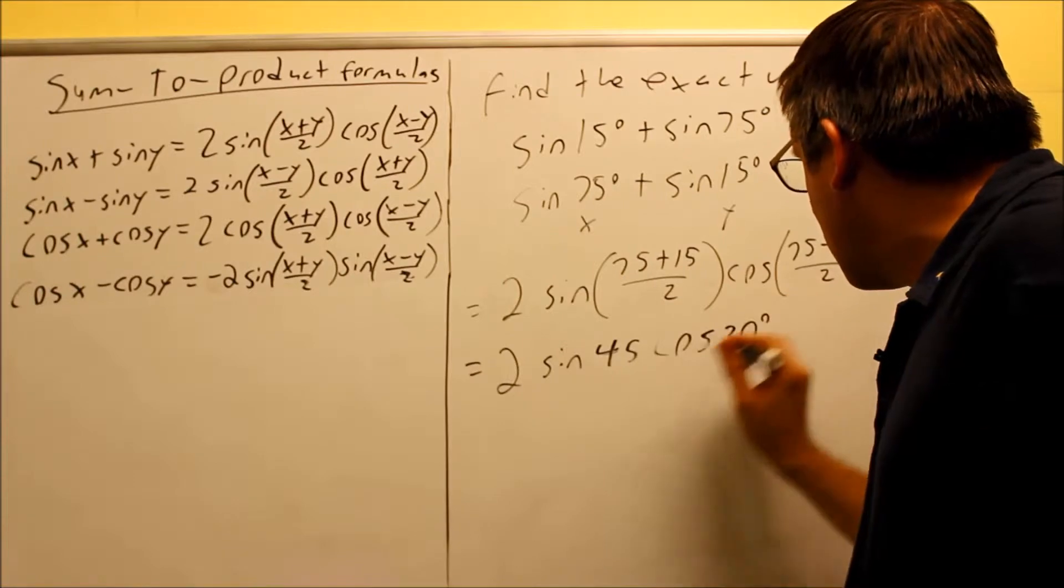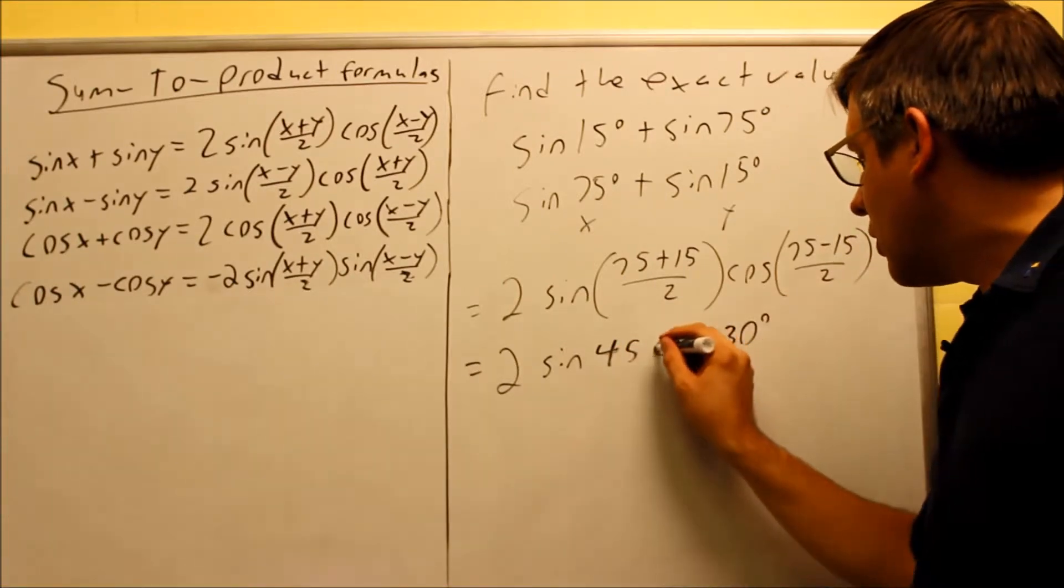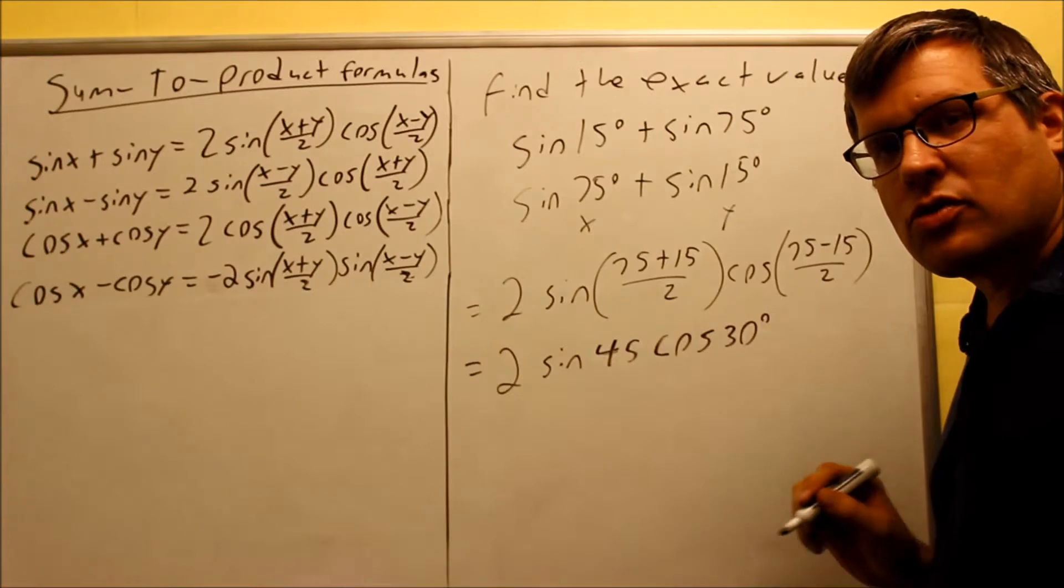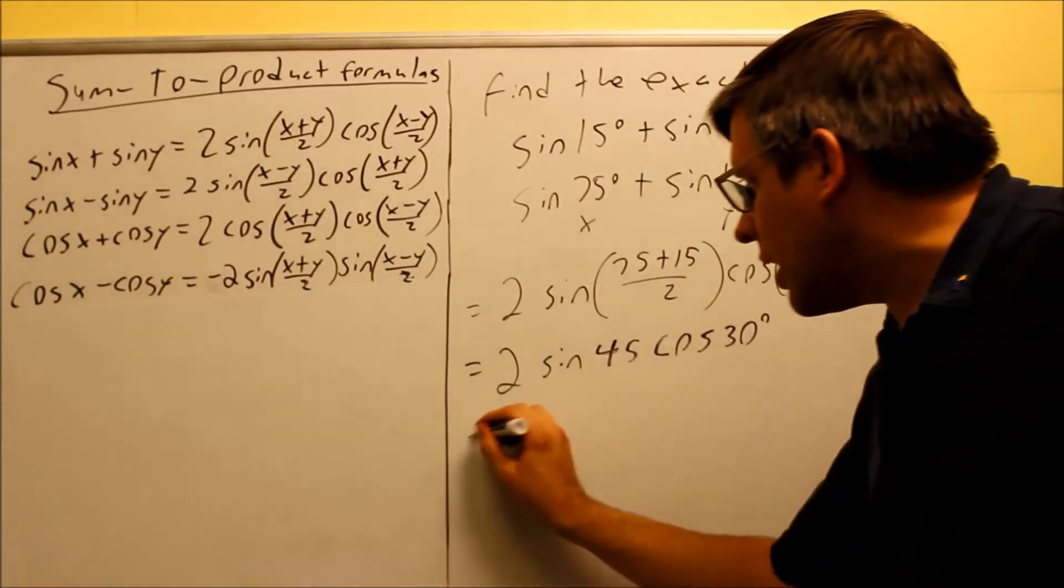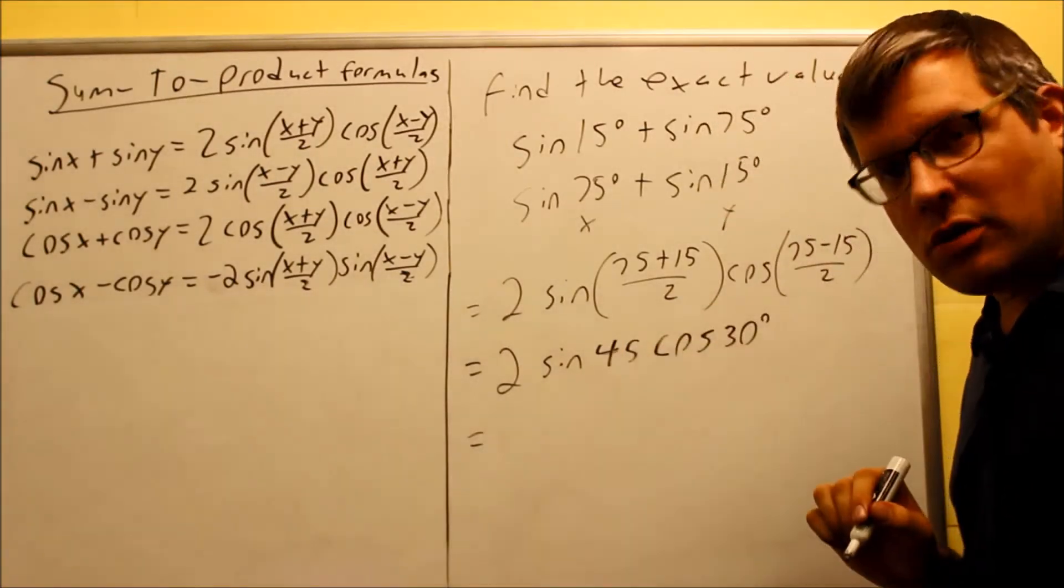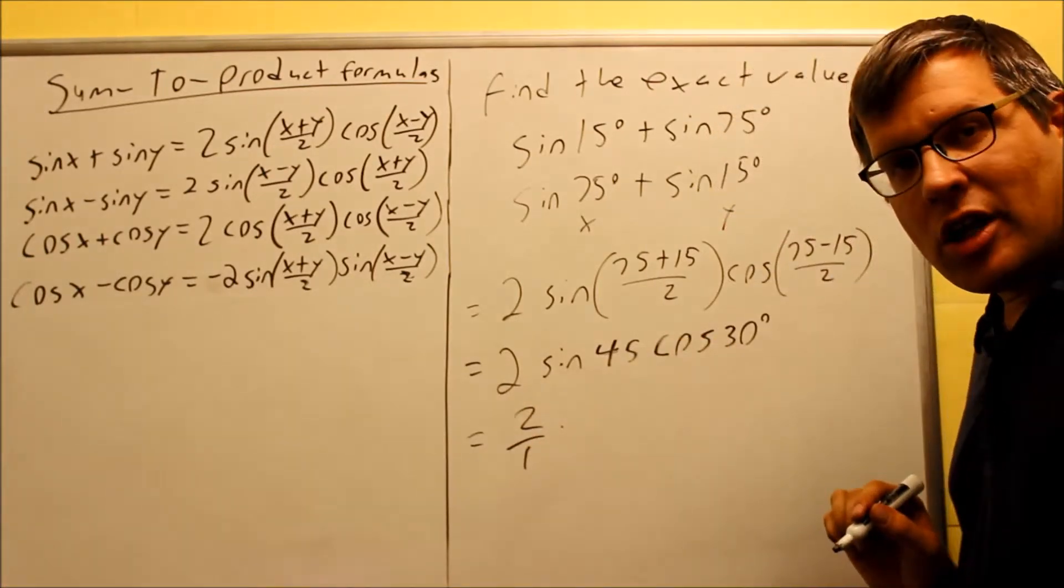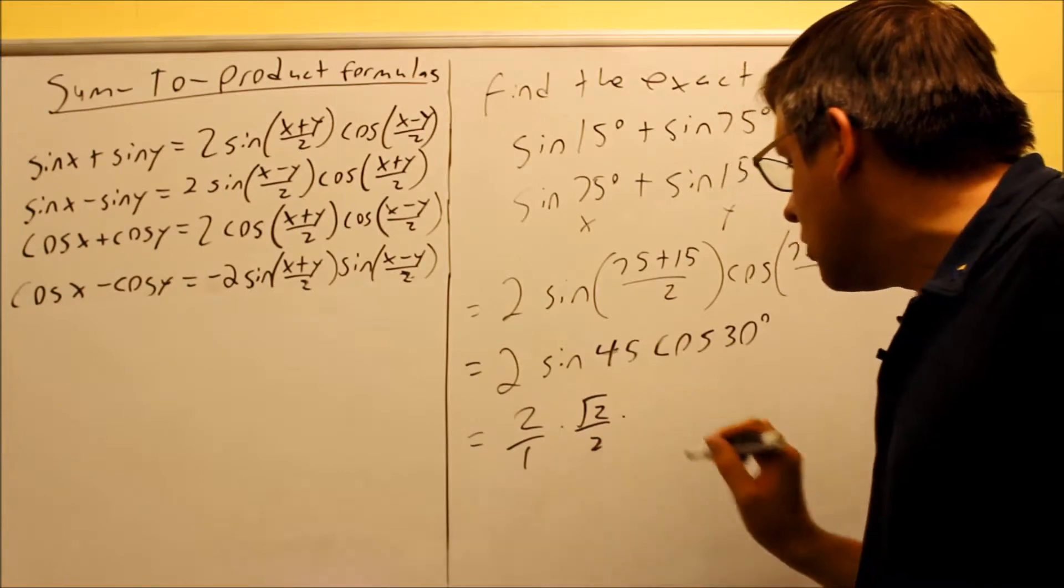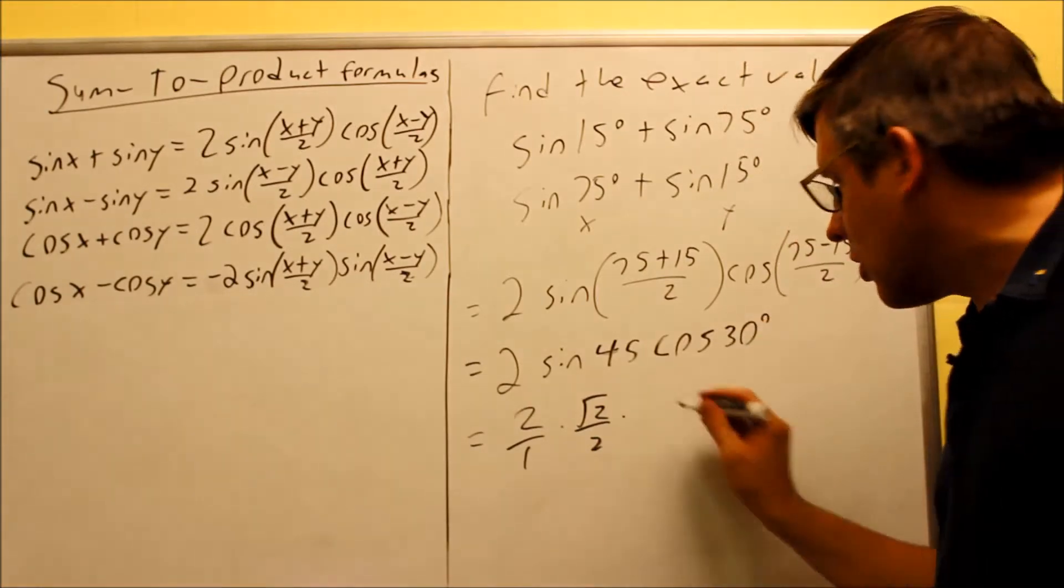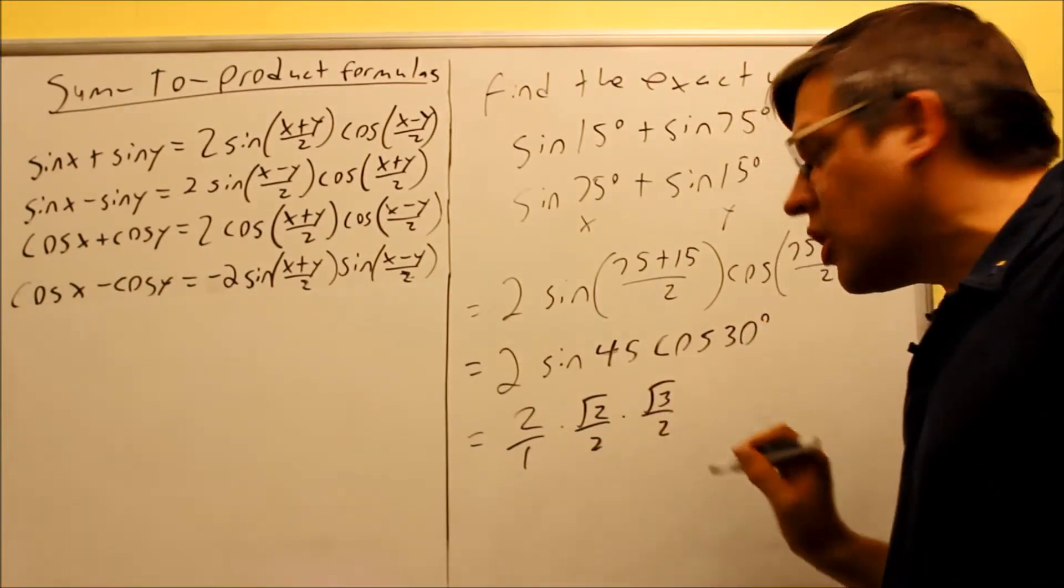So I have sine 45 and then I have cosine 30 with a 2 in front. Now I'm just going to put in the values from my table or I can use my unit circle for that. The exact value for sine 45 is square root of 2 over 2. The exact value for cosine 30 is square root of 3 over 2.